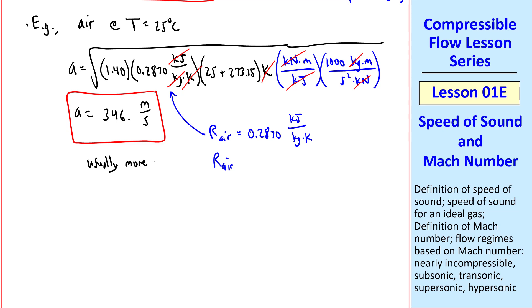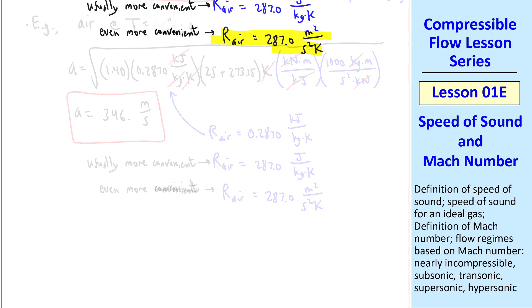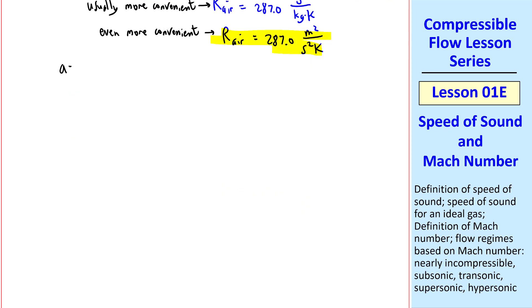I'll comment that here we used R air as 0.2870 kilojoule per kilogram K. But it's usually more convenient to use R air equal 287.0 joule per kilogram K. That would let us avoid this factor of 1,000 in our unity conversions. Even more convenient is R air is 287.0 meters squared per second squared K. That allows us to redo this problem without any unity conversion factors. A equals square root of gamma RT, equal square root of 1.40, 287.0 meters squared per second squared K. And then temperature in K was 298.15 K. Leaving us with meters squared per second squared right away. And of course the same answer that we got previously. A is 346 meters per second.